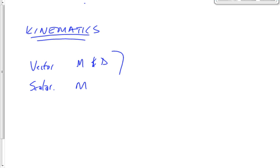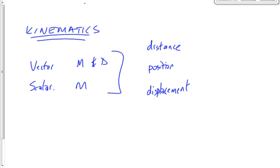We talked about three terms that are all examples of either vectors or scalars: distance, position, and displacement. All measured in meters. The symbol for distance is delta D, for position is D, and for displacement is delta D with a little arrow over it. That arrow means there is a direction associated with position and displacement — they're vectors. Distance is a scalar.